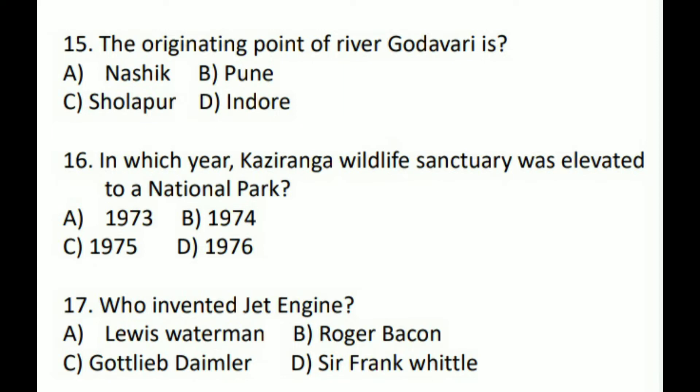Next question: The originating point of river Godavari — the answer is Option A — Nashik. Next question: In which year was Kaziranga Wildlife Sanctuary elevated to a National Park?